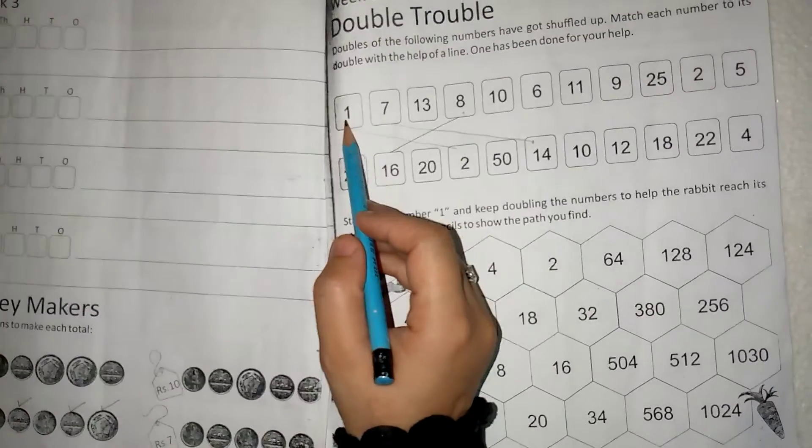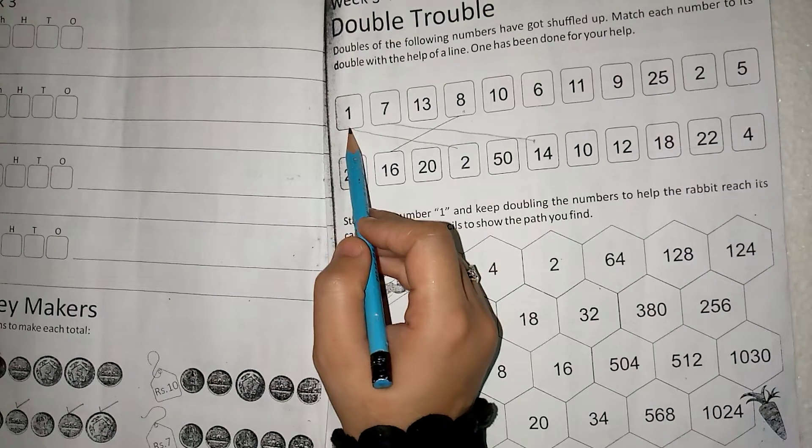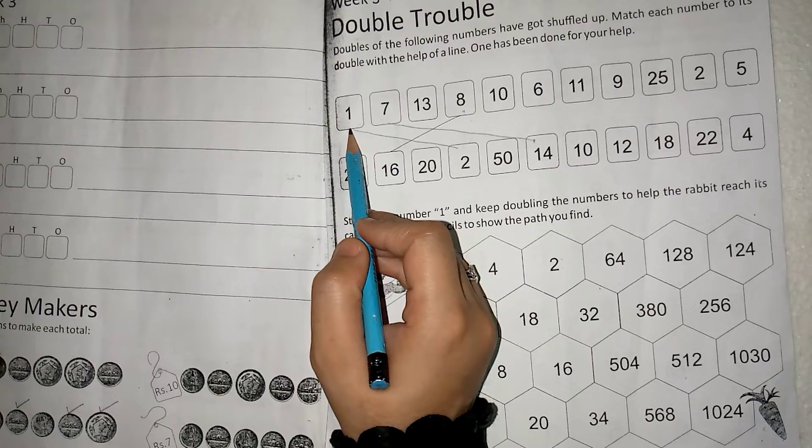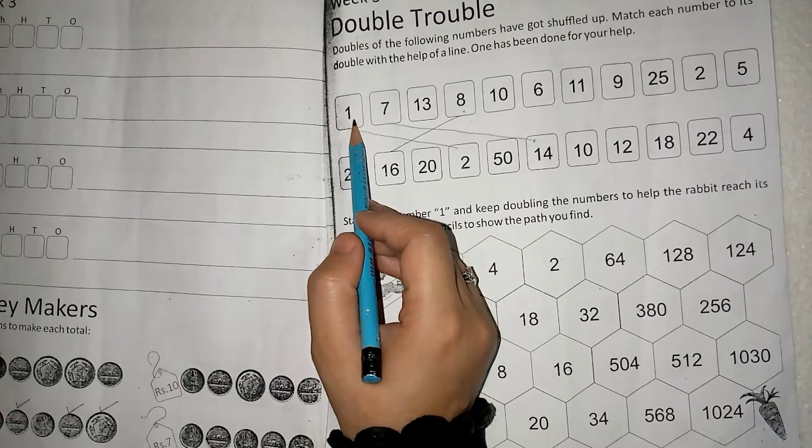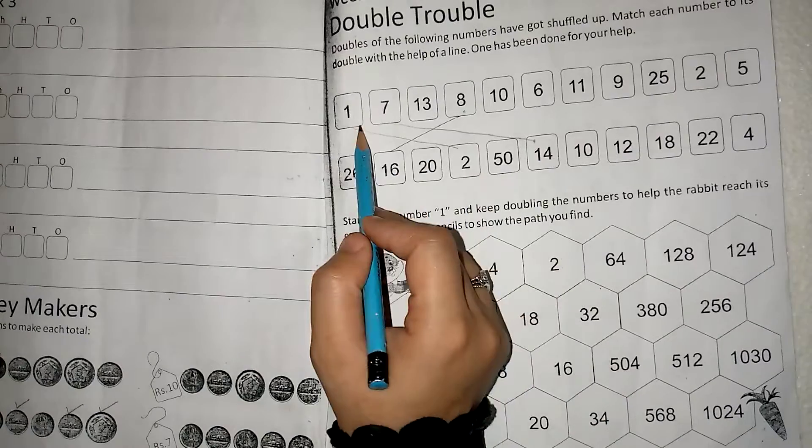Let's suppose you have one, so one double means that you have to have that number plus. If you have one plus one, then two will come. Now, you have to find two from the second row and match it with two.